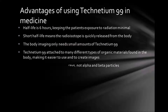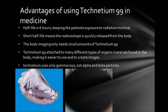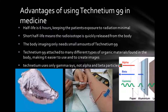As Technetium-99 uses only gamma rays, there is no harm to the tissues. However, if alpha and beta particles were also emitted, then there could be a chance of mutations or harm to the body and tissues.